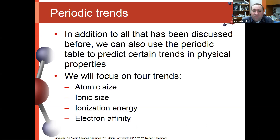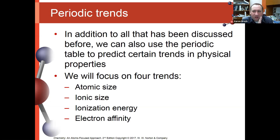We're going to focus on four trends in particular, and of those four, three of them are particularly important to the majority of discussions in the coming chapters. The trends we're going to look at are atomic size, ionic size, ionization energy, and then we'll just touch on electron affinity. We won't talk a whole lot about it because it has the least generalization and is the least useful as a result.